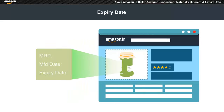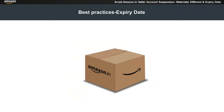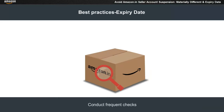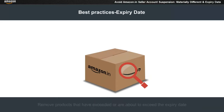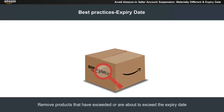Amazon usually considers products which still have 50 days to the actual expiry date. However, the responsibility lies with you to conduct frequent checks and remove products that have exceeded or are about to exceed the expiry date.